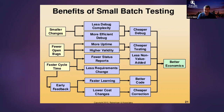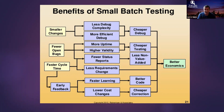Smaller batches give us faster cycle time, which is huge — not only does it make more money, but having faster cycle time means frequent, accurate, and actionable feedback. That's how we stay as safe as possible in the complex world. Faster cycle time means fewer requirements changes over time, so the cost of change is low.